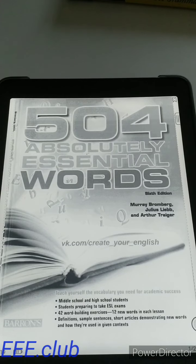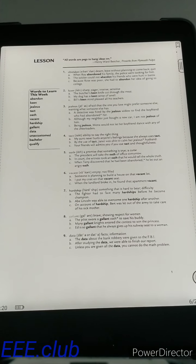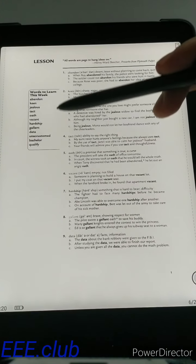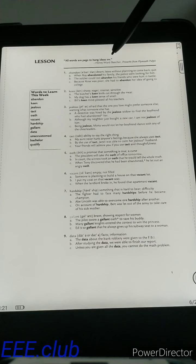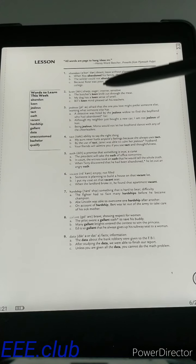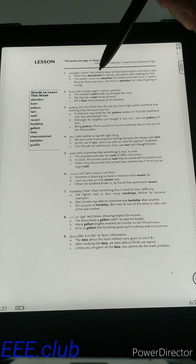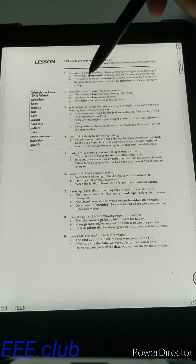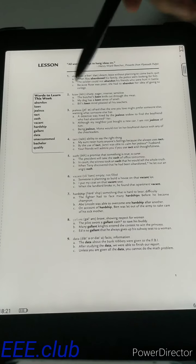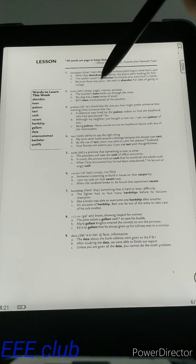Each lesson is going to teach you 12 words. It will start with a quote that's related to words and then will give you each word, its pronunciation, the meanings this word gives, and three examples using this word. You're using the new word, pronunciation, meaning or definition, and examples.